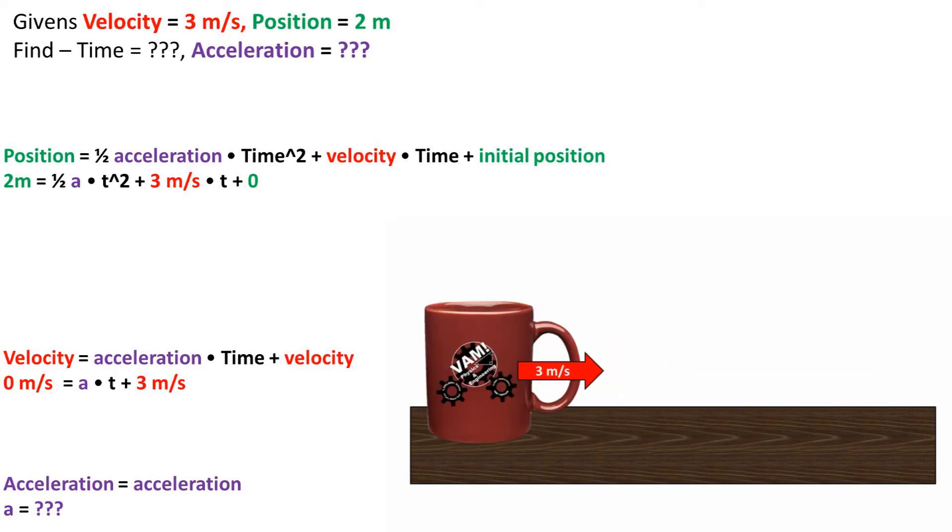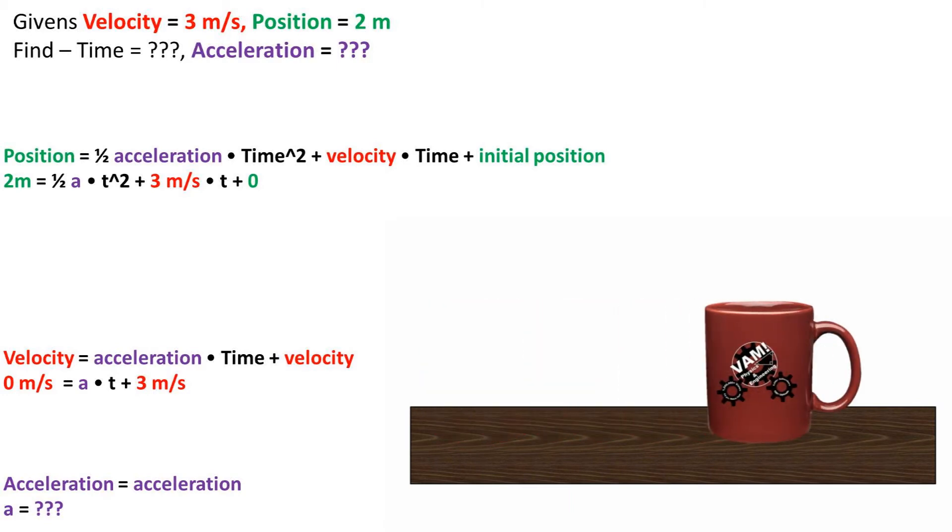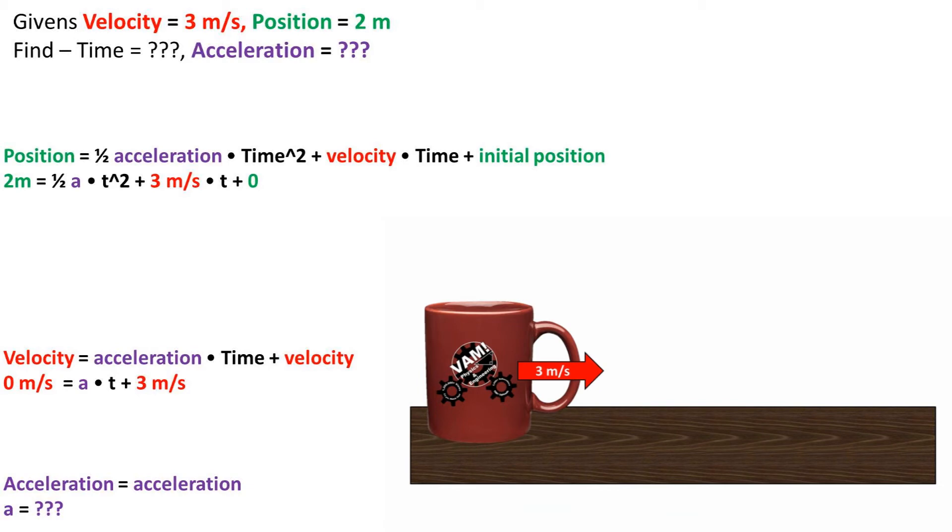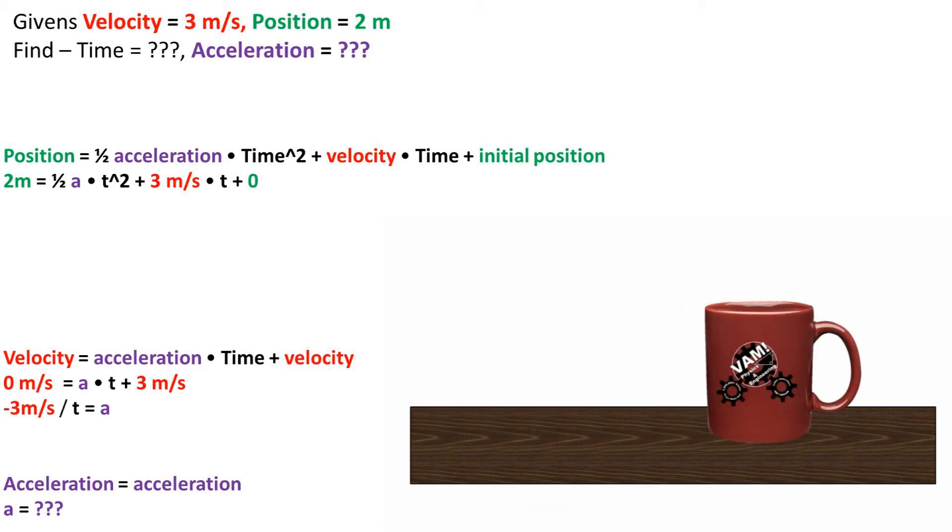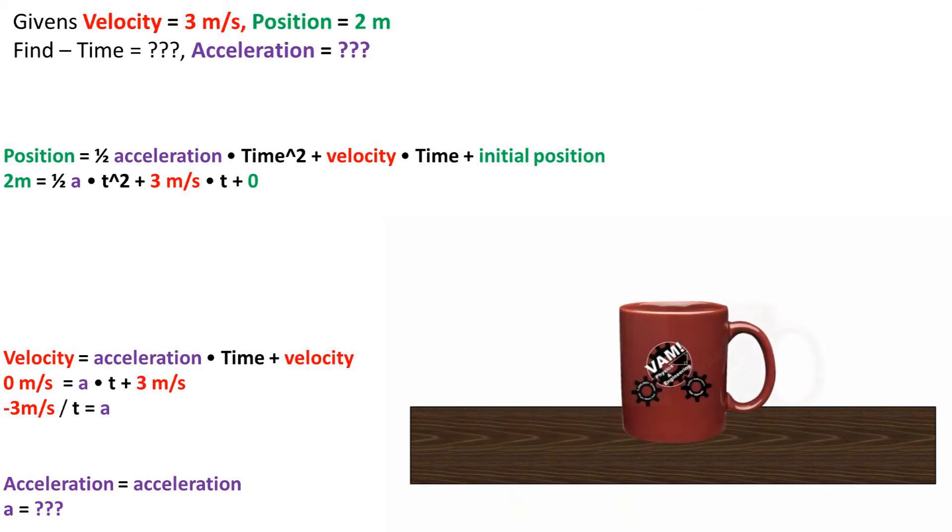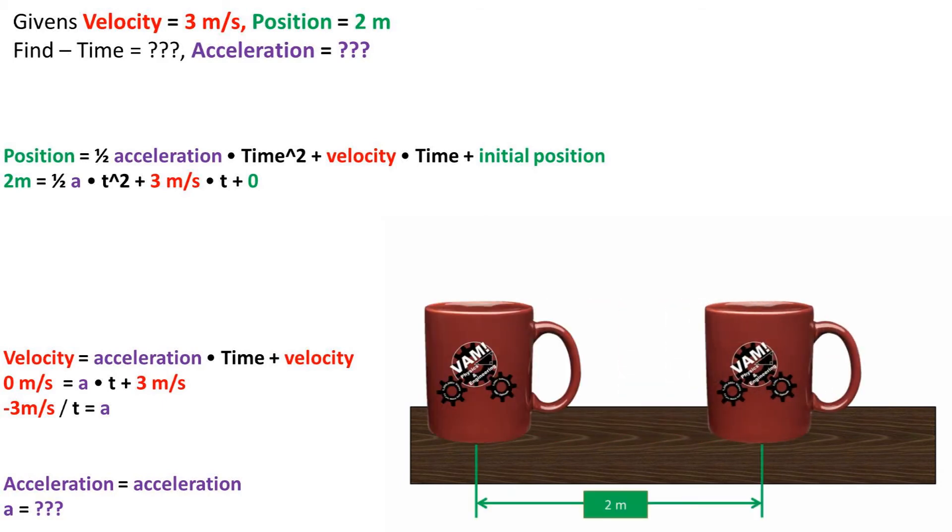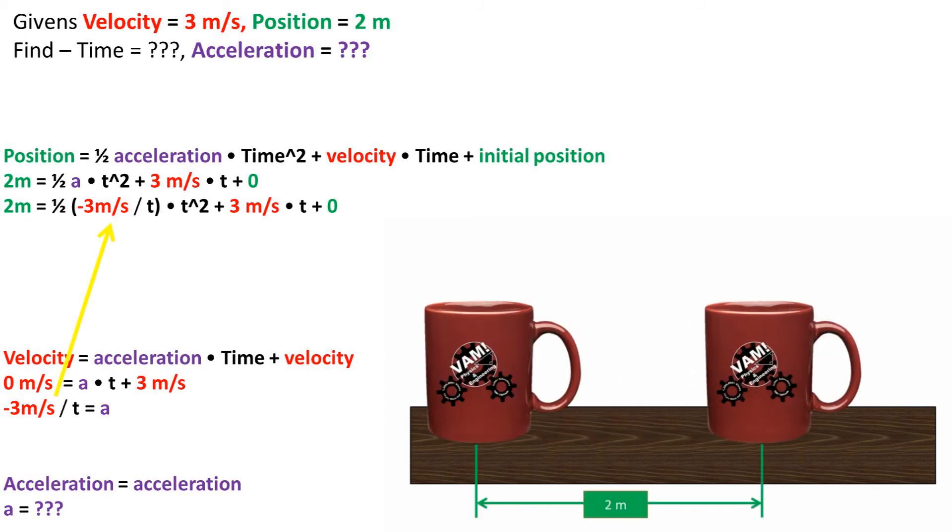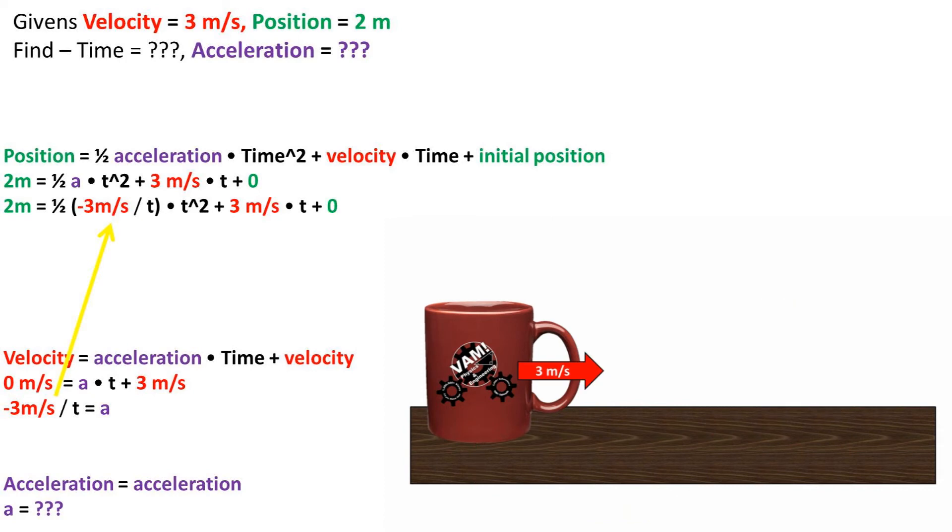We have two unsolved variables: time and acceleration. If only there was a way to relate the two variables to reduce the equation to one unsolved variable. Well, if we look at the velocity equation, we can subtract 3 meters per second and divide by time, and this value is equal to acceleration. Now we can plug in what we found acceleration to be equal to into the position formula where acceleration once was.